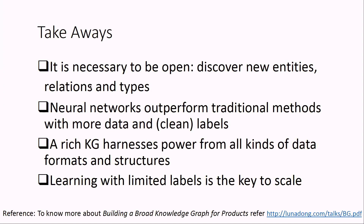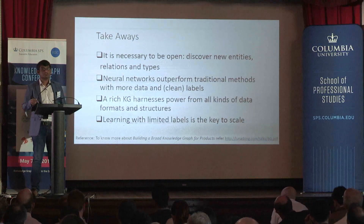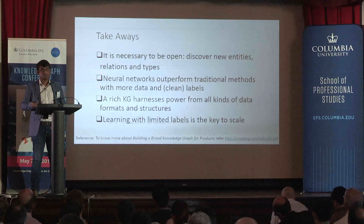To summarize, in this talk we saw the value of being open — how to develop a model that can generalize to new domains, new entities, new relations, and types, without always relying on a predefined lexicon or vocabulary. We found that neural networks outperform traditional methods, but we need to clean the training labels, and with simple cleaning we can boost performance by as much as 3x. A rich knowledge graph will harness power not only from structured data, but also from semi-structured representations like DOM trees, tables, and lists, and also from unstructured text. The key challenge to scale is to learn with limited labels, where a human is in the loop selectively providing annotations, but the model should generalize from one domain to another across thousands of sources and verticals.